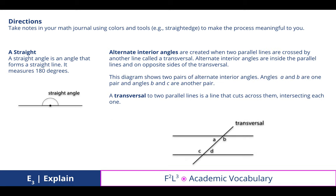Here are your formal notes, which are academic vocabulary terms for today. So take those notes in your math journal using colors and tools to make the process meaningful for you. A straight angle is an angle that forms a straight line. It measures 180 degrees. This is a review from last year.